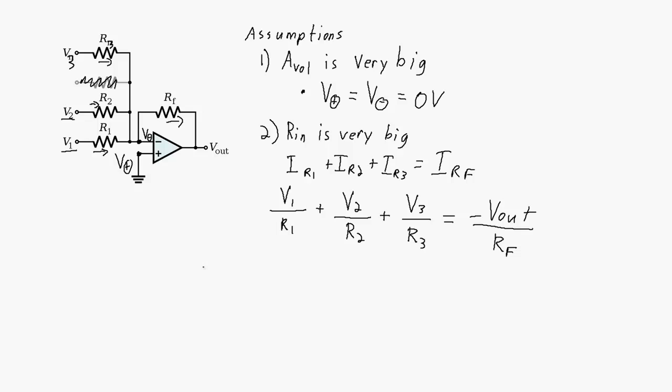So if we rewrite this equation in terms of Vout, we get Vout is equal to negative RF over R1 times V1 minus RF over R2 times V2 minus RF over R3 times V3.